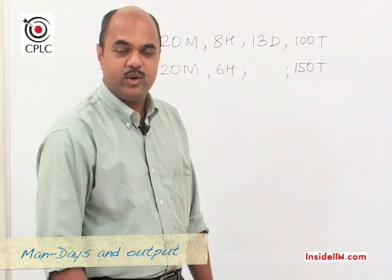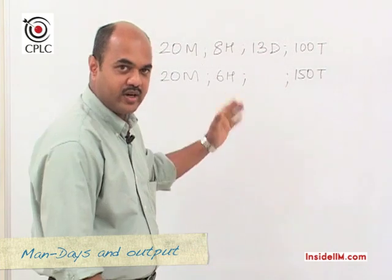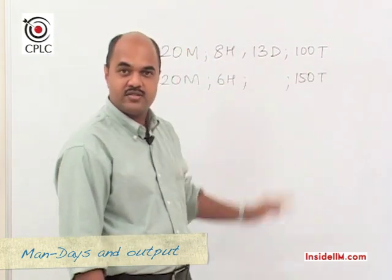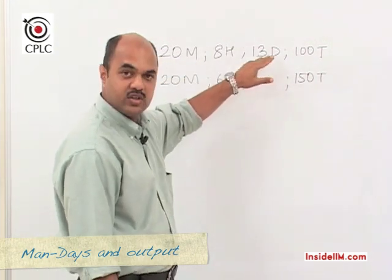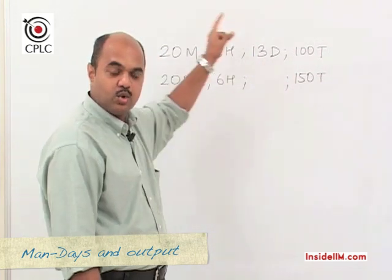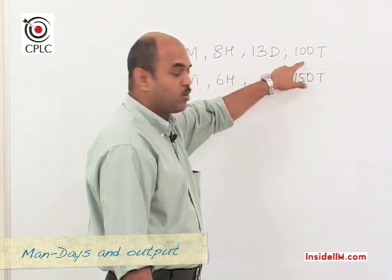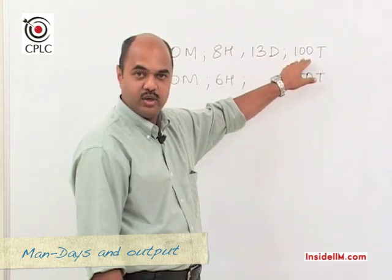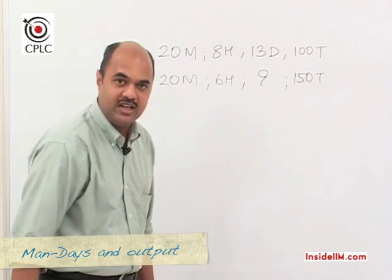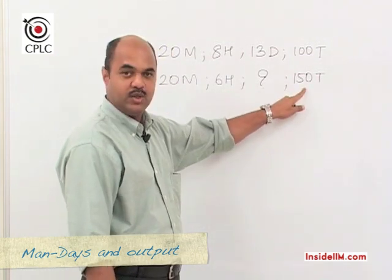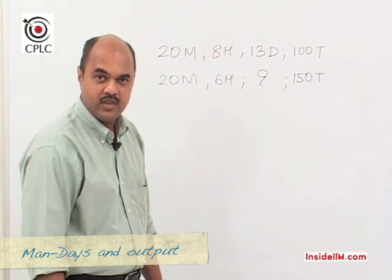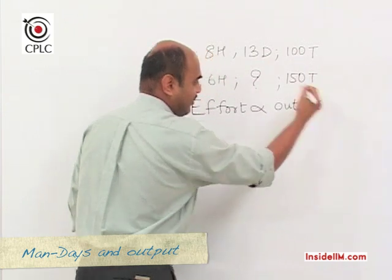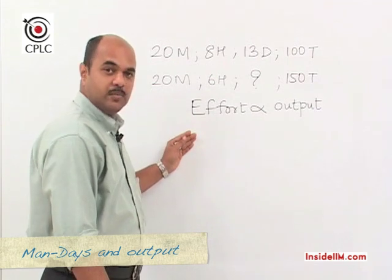Now let's extend the concept of man-days to output. Consider this question: 20 men working 8 hours a day for 13 days produce 100 toys. The product 20 × 8 × 13 gives the total effort, and the output is 100 toys. The key concept is that effort varies directly as output — more work done leads to more output.